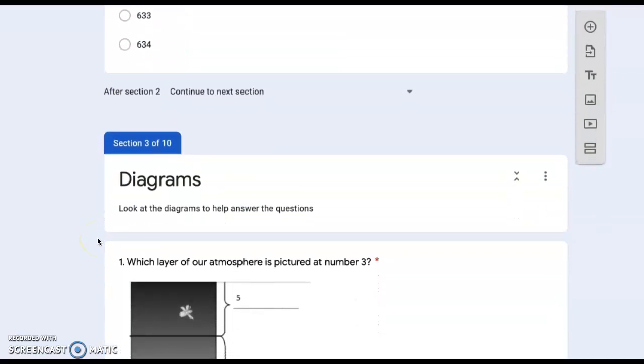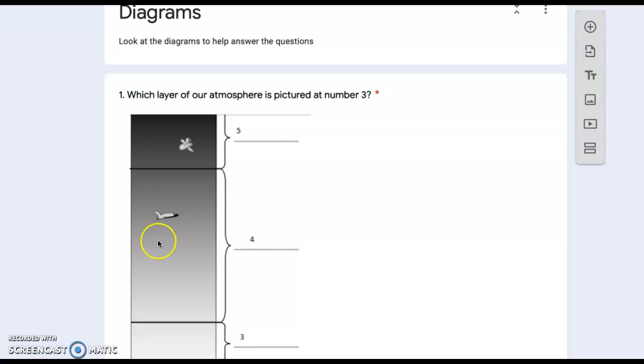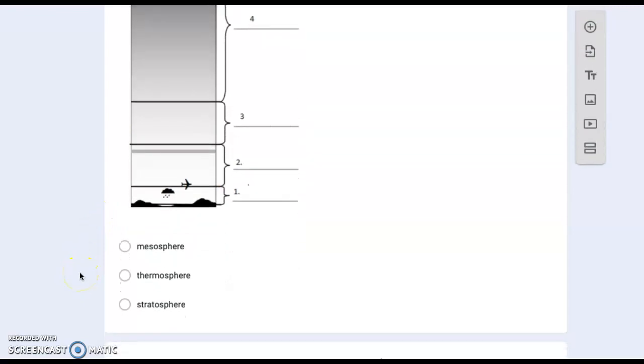Diagrams: look at the diagrams to help answer the questions. Number one: which layer of our atmosphere is pictured at number three? So right here in the middle, the mesosphere, the thermosphere, or the stratosphere?